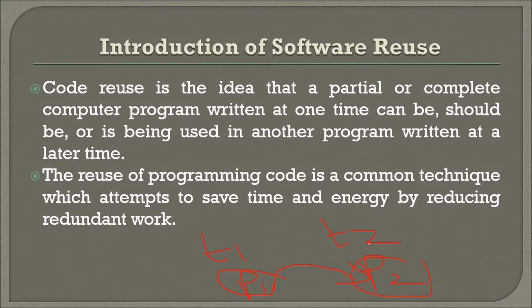The reuse of programming code is a common technique which attempts to save time and energy, because you don't need to make everything from scratch. You have some background, certain things which have already been tested and verified, so it saves energy and time, and redundant work can be minimized to a certain extent.